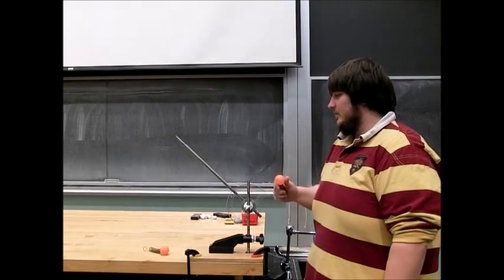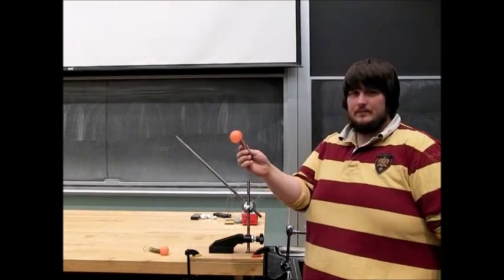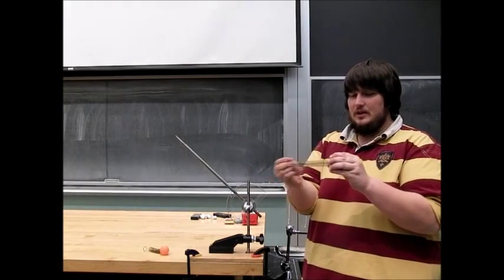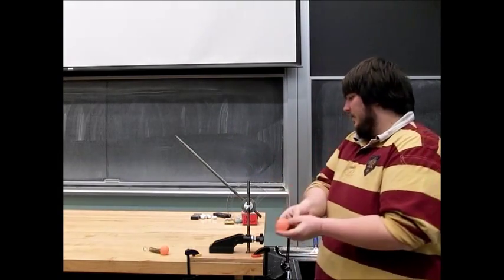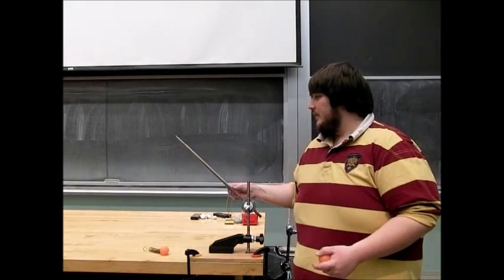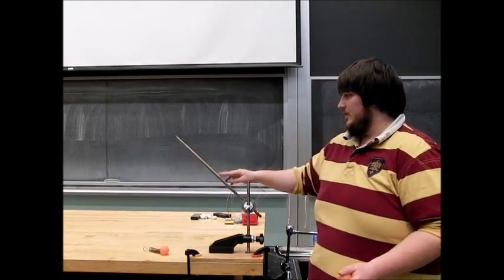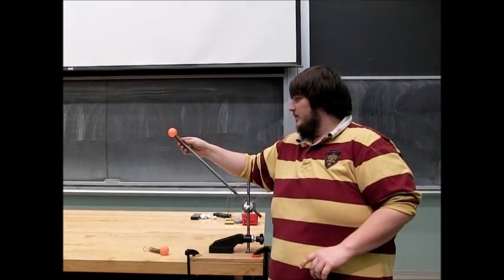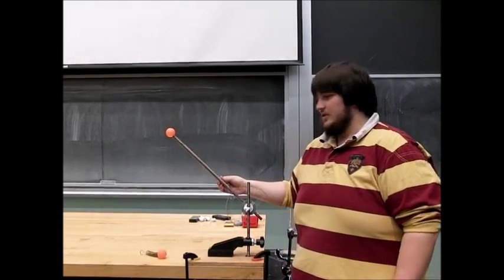This is our spring launcher, so we have a ball, and attached to the ball is a very stretchy spring. And the launcher base itself is a steel rod with a ruler taped onto it so that we can measure the amount that we are stretching the spring.